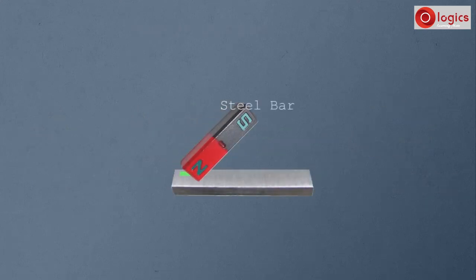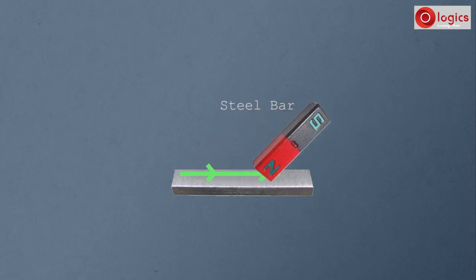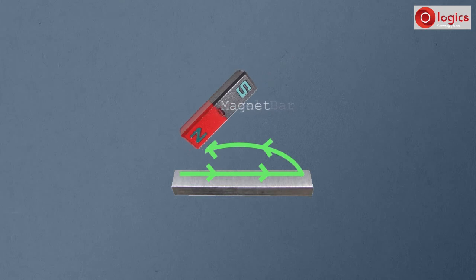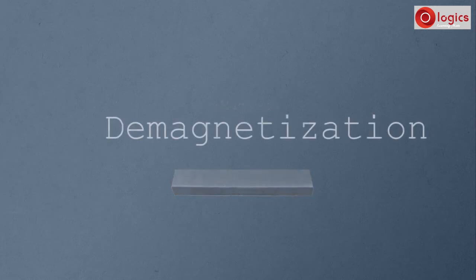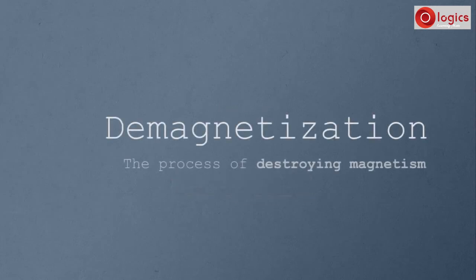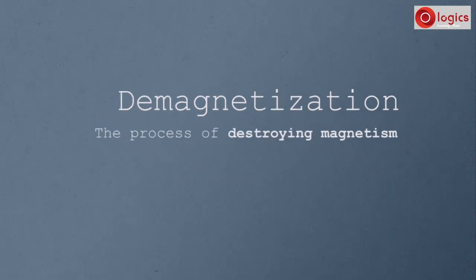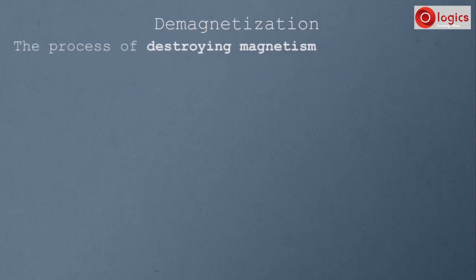This is the steel bar. You know different types of magnetization procedures. After magnetization it becomes the magnet. How to make this magnet into a steel bar again? Demagnetization. The process of destroying magnetism is called demagnetization. Let's see some processes of demagnetization.